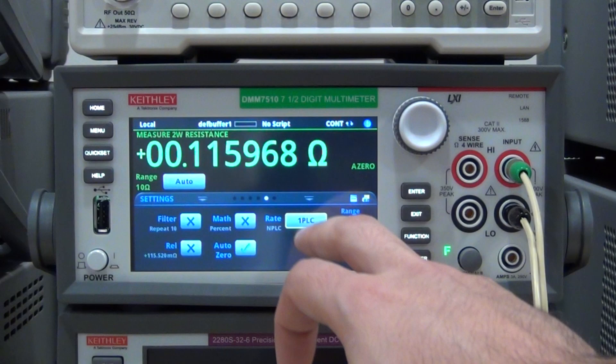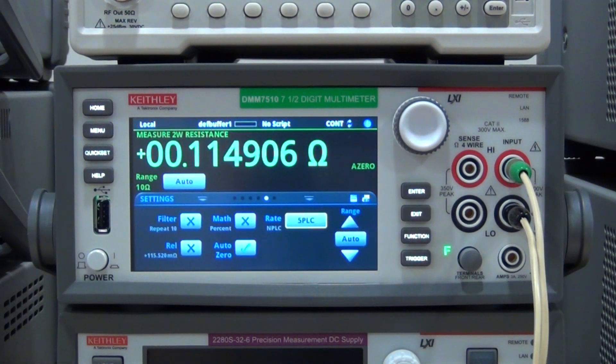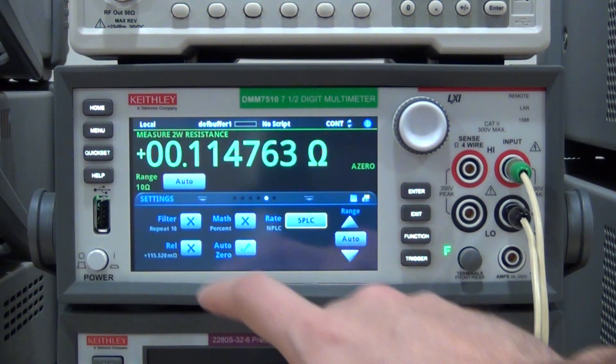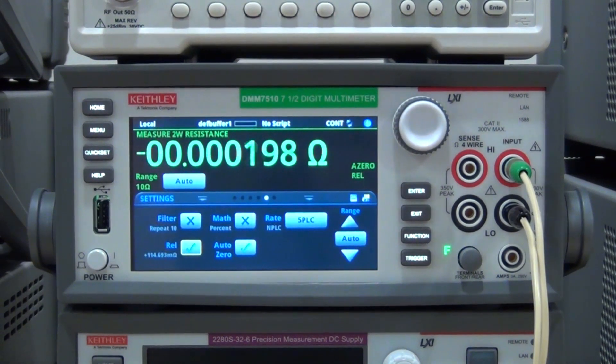Because this is a two wire measurement we're going to select the two wire measurement. Under the settings, let's change that to five power line cycle so we can get a more stable and accurate measurement, and we're going to turn the relative on so it's basically set to zero. I'm going to step through 0.1 ohm steps which is the smallest division of the decade resistor box.